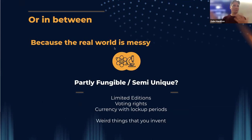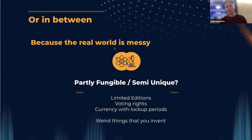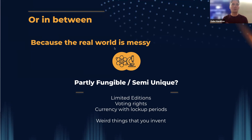Some of these things kind of cross over. You have a limited edition of some art — there are 300 of them. Each of those 300 can be exchanged, they're kind of the same, but those 300 are not the same as some other ones. Voting rights might be the same or they might be different. Some currency that has a program attached to it — maybe currency has a lockup period. My currency unlocks next month, yours unlocks in two months — those are slightly different. Who knows what interesting things you might invent that fit in between these categories.